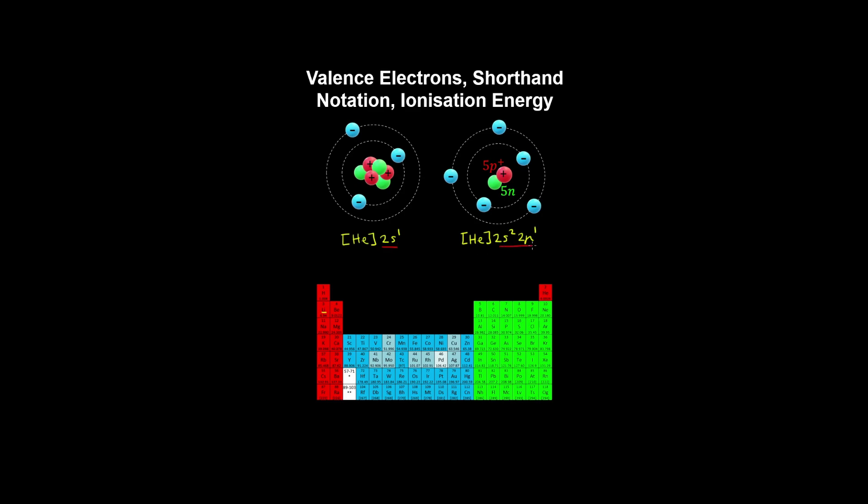So the electrons in the outer shell of the atom are called the valence electrons and they're shown here using the Bohr model.